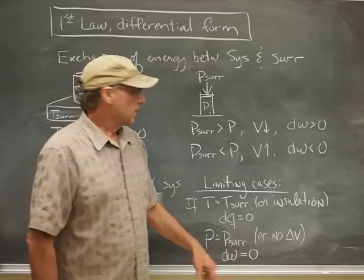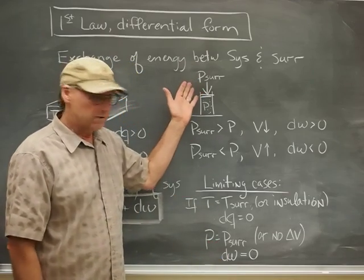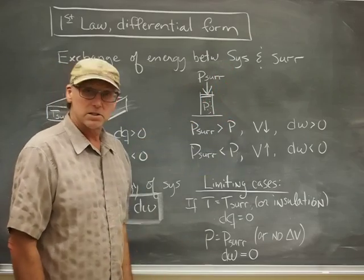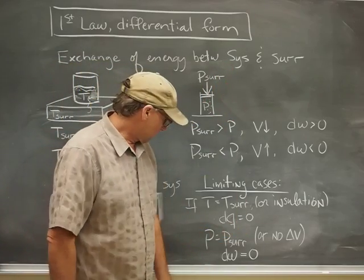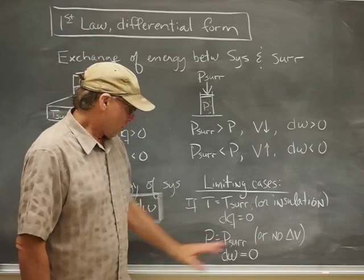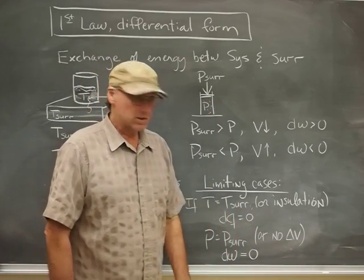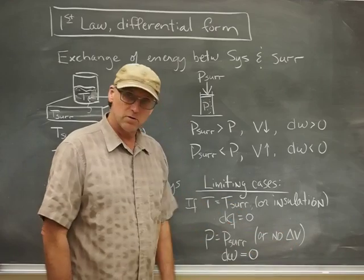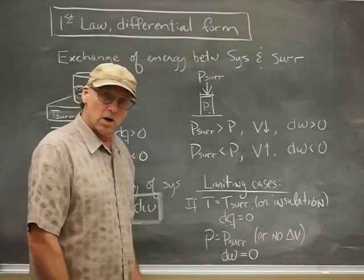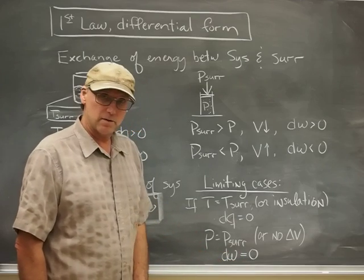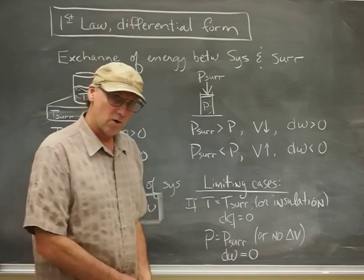What if the pressure is equal and the system is equal to the pressure of the surroundings? We would say that the system is in mechanical equilibrium with the surroundings. Or maybe there's just some blockage that prevents the volume of the system from changing, no change in volume. Either way, we can't get any work done, and so we would call that DW equals zero.